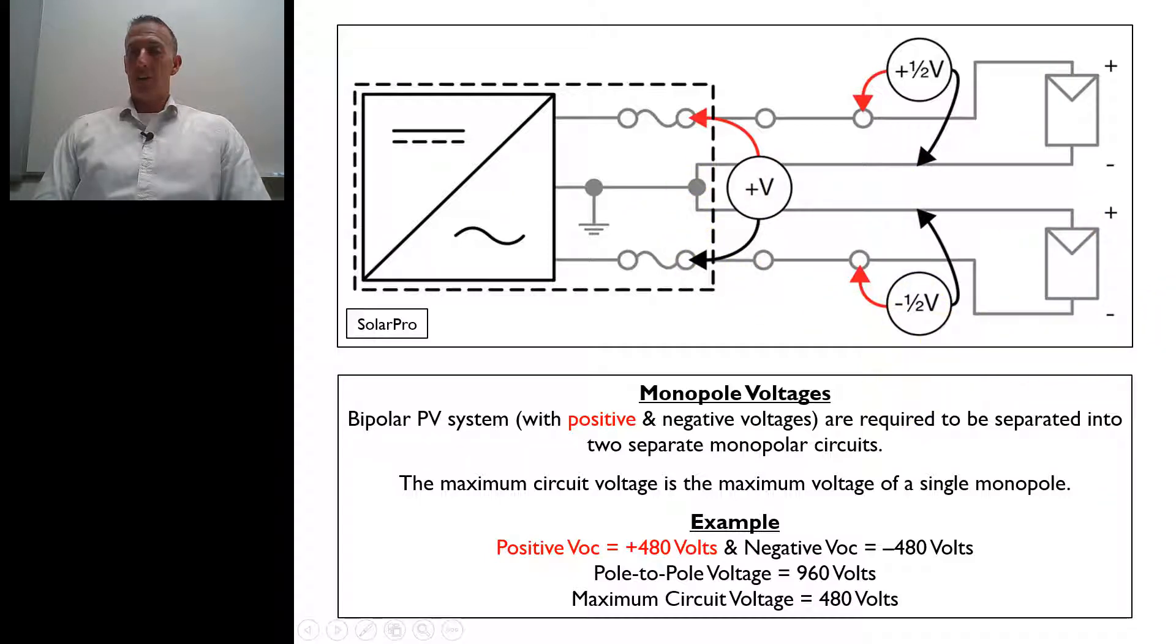But when we're talking about the NEC, the 2017 NEC and the maximum voltage requirements, the maximum circuit voltage is going to be 480 volts, and that would be based on either this monopole or this monopole here.